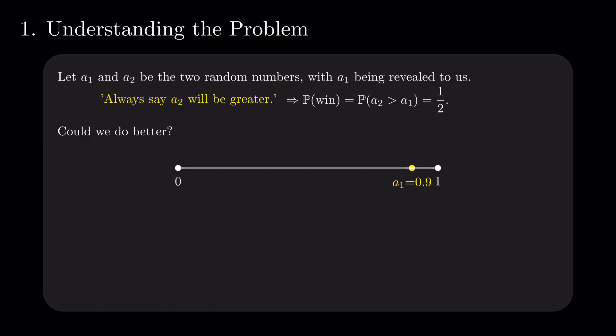If we find that A1 equals 0.9, we could bet that A2 will be smaller. The probability of this is 9 times the probability of the converse. Let's construct a strategy for playing the game based on this observation.